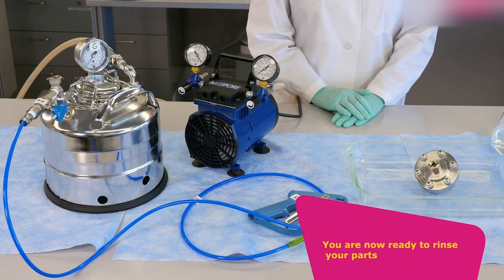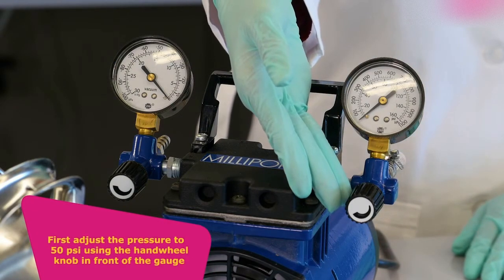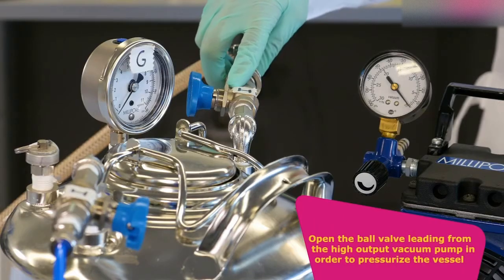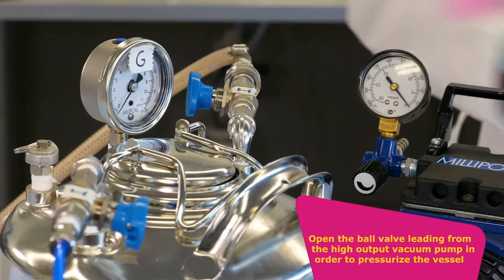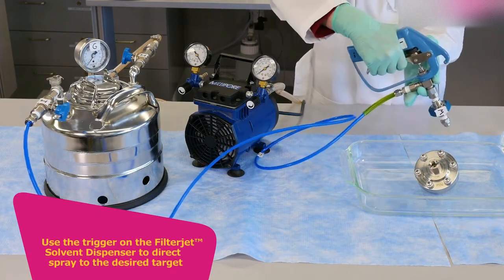You are now ready to rinse your parts. First, adjust the pressure to 50 psi using the handwheel knob in front of the gauge. Open the ball valve leading from the high output vacuum pump in order to pressurize the vessel. Use the trigger on the filter jet to direct spray to the desired target.